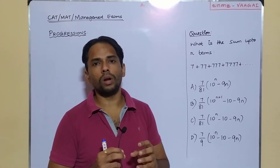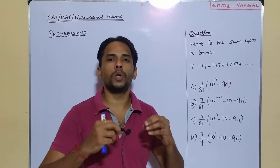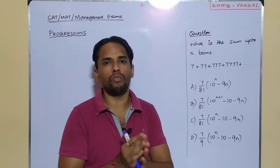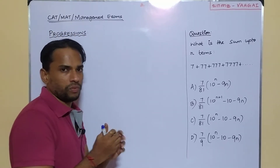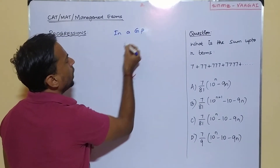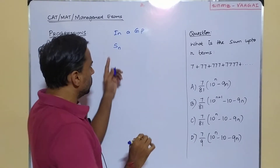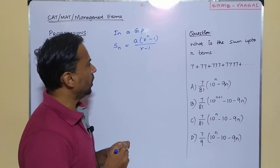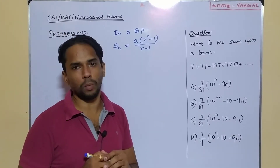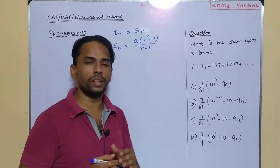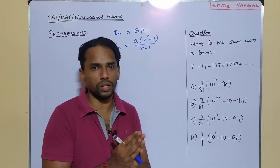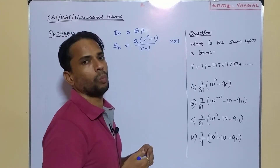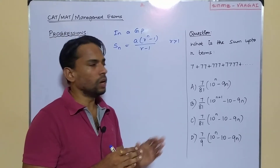Before that, we need to be sure about the basic formulas to use here. We should be very clear with one important GP formula — the geometric progression formula — to find the sum up to n terms. So let us recall the formula. In any GP, the sum up to n terms, represented by Sn, is equal to a into (r power n minus 1) divided by (r minus 1), where a is the first term, r is the common ratio, and n is the number of terms. This formula is used when r is greater than 1.